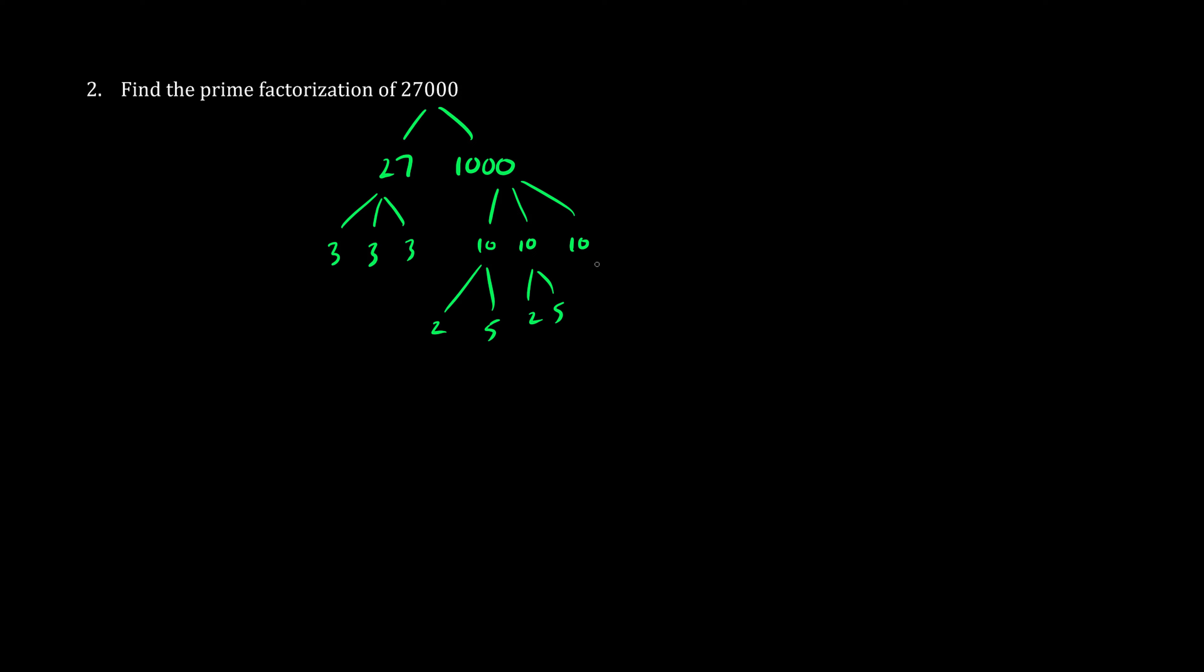10 is the same thing as 2 times 5, and so we have lots of children. We have twos, three of them. So this equals 2 times 2 times 2.